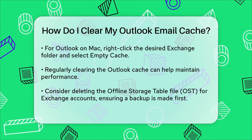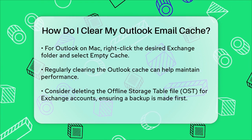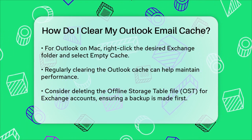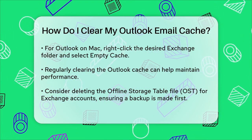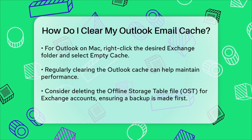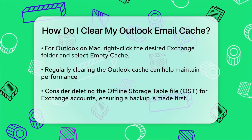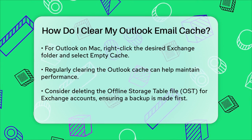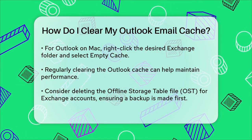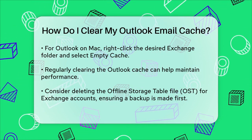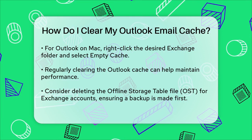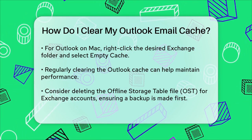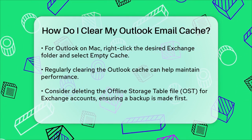Regular Cleanup. It's a good idea to regularly clear your Outlook cache to avoid performance issues. You can also delete the offline storage table file (OST) if you're using Outlook with an Exchange account, but make sure to back up the file first. By following these steps, you'll be able to clear your Outlook cache and resolve common issues like slow performance and synchronization errors, ensuring your email client runs smoothly.